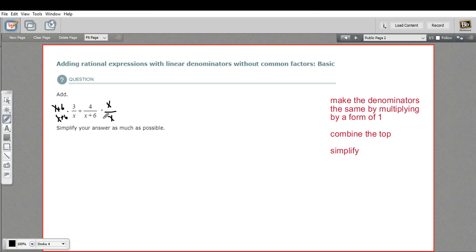What that does is it gives us denominators for both of them that are X plus 6 times X. So that's our denominator. On the top, on this one, we've got 3 times X plus 6. I'm just going to go ahead and do that multiplication. 3 times X is 3X, 3 times 6 is 18.